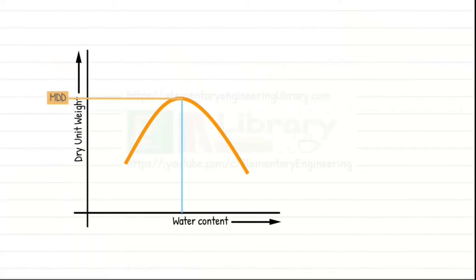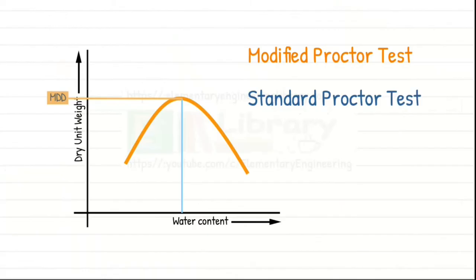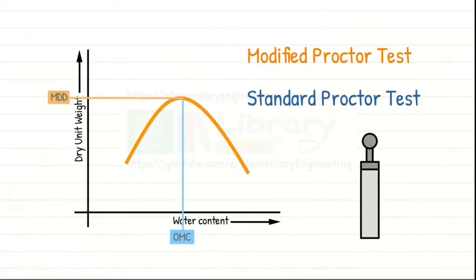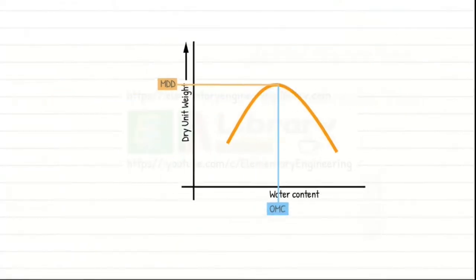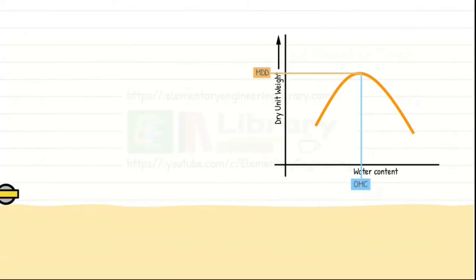The purpose of a modified proctor test is same as a standard proctor test, that is to find out the optimum moisture content at which soil achieves its maximum dry density. But modified proctor test is used where heavier compaction is needed. Then in the field, our goal is to achieve soil density as close as possible to the maximum dry density obtained by a laboratory test.